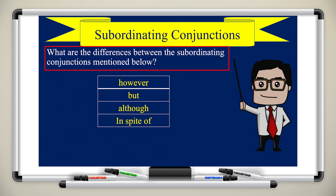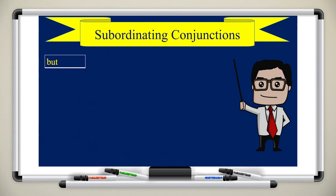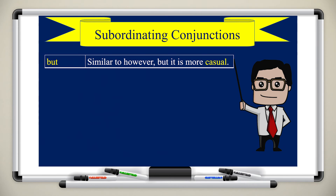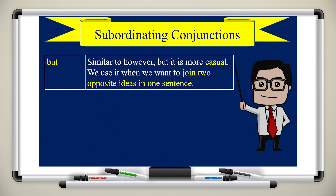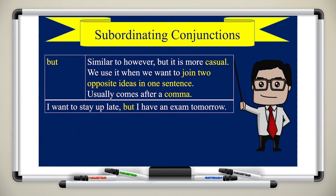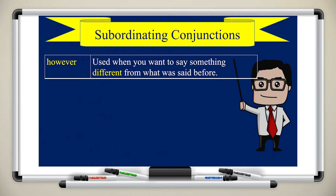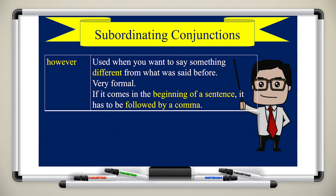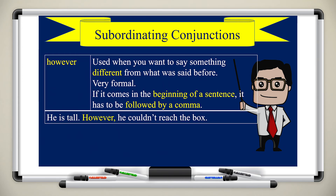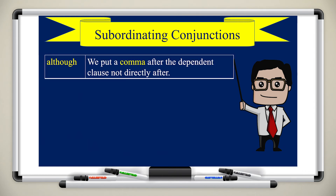What are the differences between these subordinating conjunctions? Starting with 'but': it is more casual and used when we want to join two opposite ideas in one sentence, usually after a comma. Example: 'I want to stay up late, but I have an exam tomorrow.' 'However' is used when you want to say something different from what was said before; it is very formal. If it comes at the beginning of a sentence it must be followed by a comma. Example: 'He is tall; however, he couldn't reach the box.'